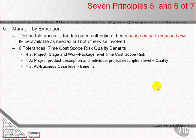Management by Exception defines six axes of variation in project performance: time, cost, scope, risk, quality, and benefits. Second, it sets limits on the authority delegated between each management level over the allowable variation from the baseline plan within each of the six axes.